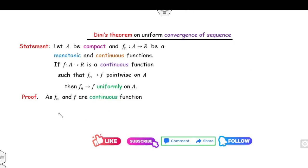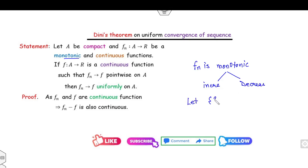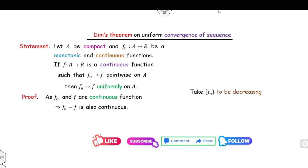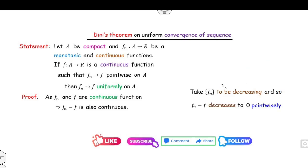The proof is very simple. Since fn and f are both continuous functions, fn minus f is also continuous, because the difference of two continuous functions is also continuous. Also, fn is monotonic — so either the sequence is increasing or decreasing. Let's assume fn is decreasing. Since fn converges to f pointwise, fn minus f converges to zero pointwise. Since fn is decreasing, fn minus f decreases to zero pointwise, meaning zero is a lower bound.